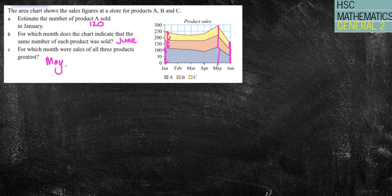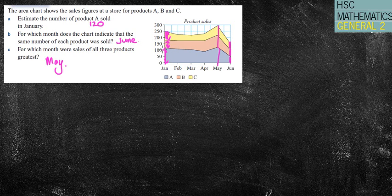I hope that all made sense. Radar charts are pretty easy to read off and you won't have to draw them out. The area chart questions are very common, so just make sure you don't fall into the trap — for example, saying product C in January was 250, when it's actually only about 75. It's the distance of the area, not just the number at the top of the band. Have an awesome day, guys — any problems let me know and I'll see you in class.